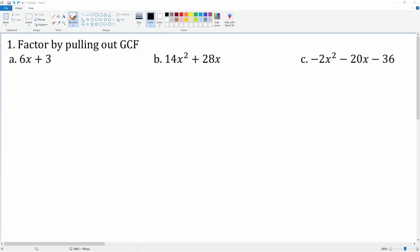Number one, you're going to factor by pulling out the GCF. Let's do the first one together. For 6x + 3, we write down each term. 6x can be broken down into 2 times 3 times x, and 3 just breaks down into 3. What they have in common is the GCF.